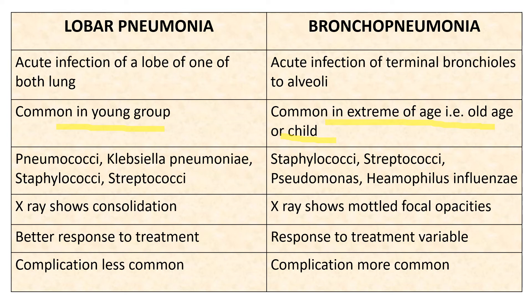Common causative organisms in lobar pneumonia are pneumococci, Klebsiella pneumoniae, and staphylococci. Whereas the common causative organisms of bronchopneumonia are staphylococci, Pseudomonas, and Haemophilus influenzae. On X-ray, lobar pneumonia shows consolidation of a lobe, but bronchopneumonia X-ray shows mottled focal opacity.